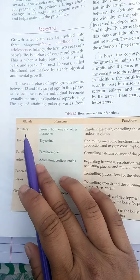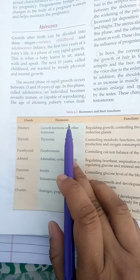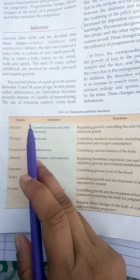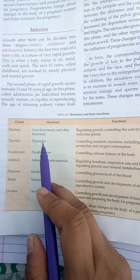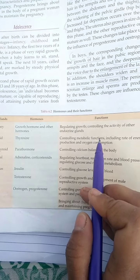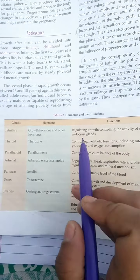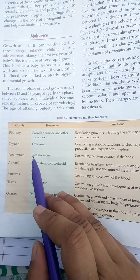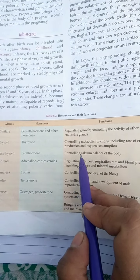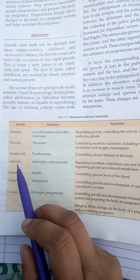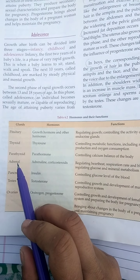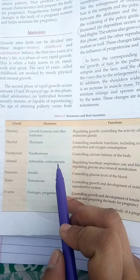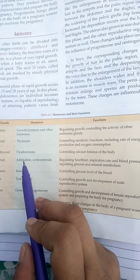You have to go through this summary table. The pituitary gland secretes growth hormones and other hormones; it regulates growth and controls the activity of other endocrine glands. The thyroid secretes thyroxine and controls metabolic functions including rate of energy production and oxygen consumption. The parathyroid, situated below the thyroid, secretes parathyroid hormone and controls calcium balance in the body. The adrenal gland, located on the upper part of both kidneys, secretes adrenaline and corticosteroids; adrenaline regulates heartbeat, respiration, and blood pressure.